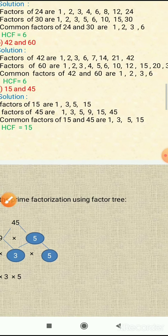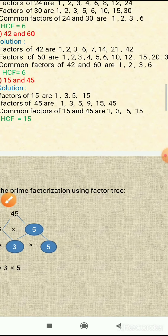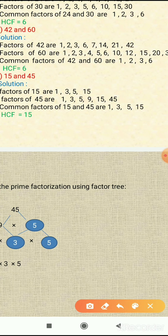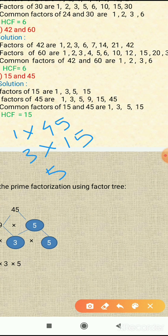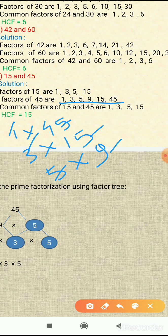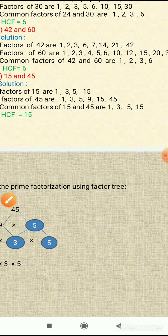Now we will find the factors of 45. How to get 45: 1 into 45 equals 45, 3 into 15 equals 45, and 5 into 9 equals 45. So the factors of 45 are: 1, 3, 5, 9, 15, and 45. These are the factors of 45.